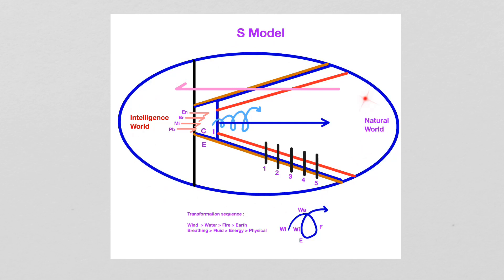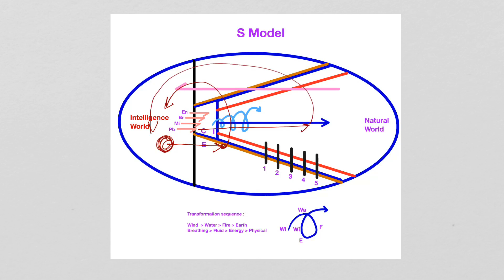So this is the S-model. As the S-model says, there is an intelligent role and then there is a natural role. When one practices meditation, qigong, or internal martial arts, one can get from the intelligent role into the natural role, and from here be able to go back to the intelligent role. So one can make the best use of one's body, mind, and energy. And of course, when the practice goes deeper, one can make even better use of the body, mind, and energy.